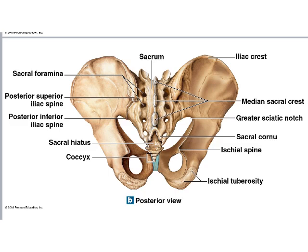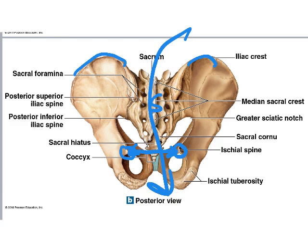Looking at the whole pelvis from posteriorly, you can see the sacrum in the middle and the iliac crests from behind. The ischial spines are important because they form the narrowest point in obstetrics — the space the baby's head must pass through when coming down through the mother's pelvis. The ischial tuberosities are also visible from this view.